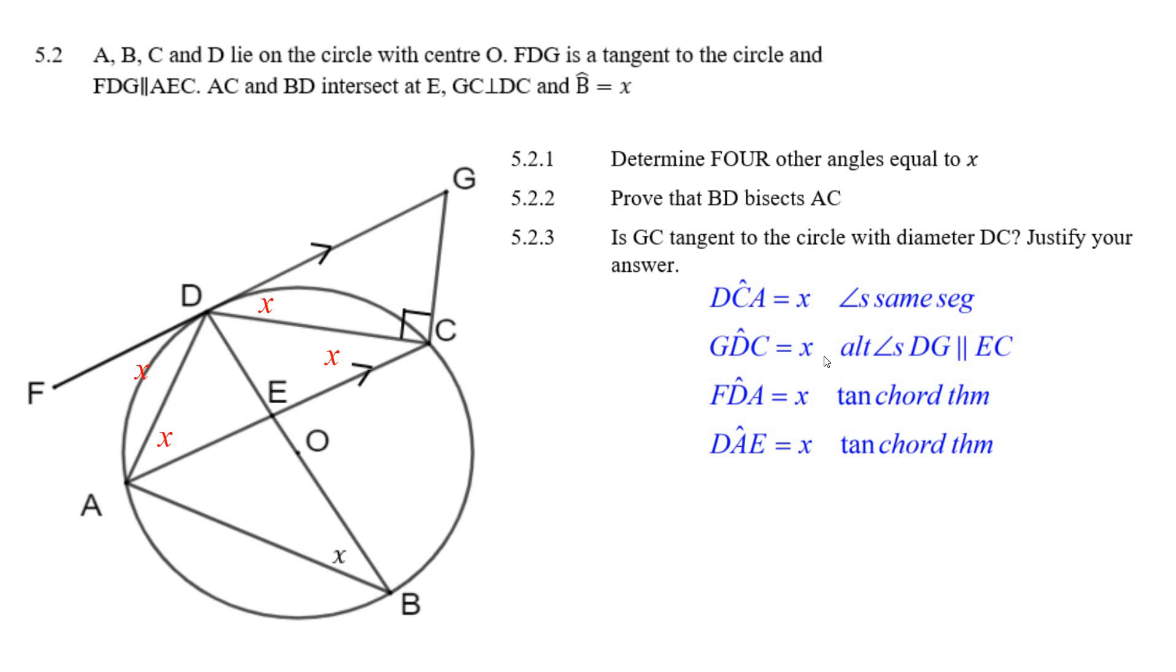G, D, C is X. Alternate angles. State the parallel lines. F, D, A is equal to X. Tan chord theorem. And D, A, E is equal to X. The tan chord theorem. Well, there's all your angles equal to X.